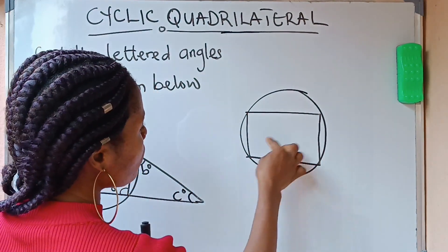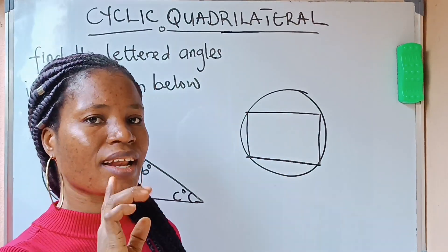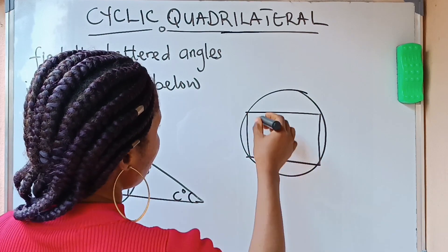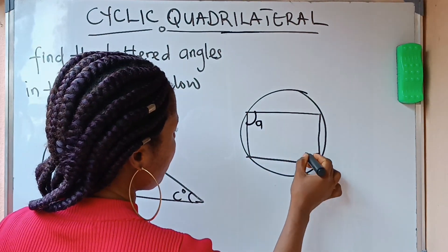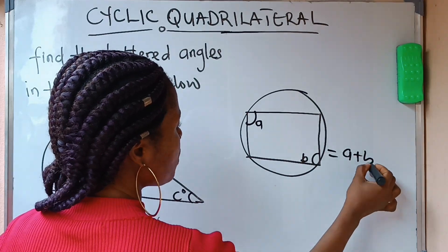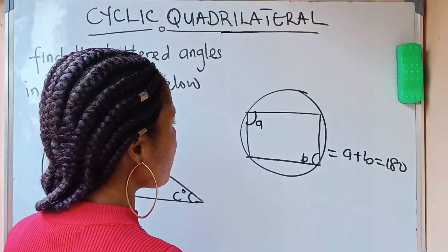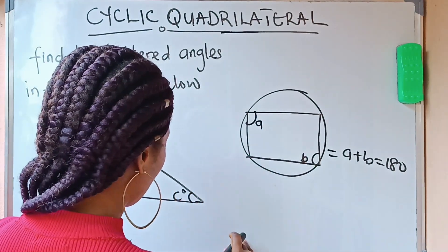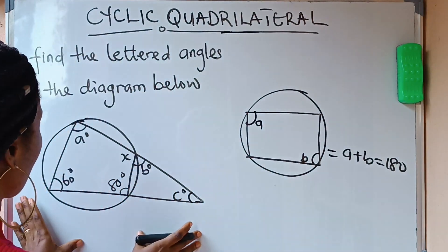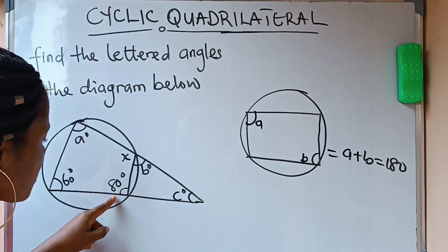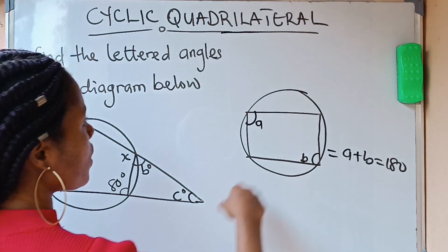One of them is that the sum of opposite angles of a cyclic quad is 180 degrees. What it means is that if you have A here and you have B here, it means that your A plus B is equal to 180 degrees. Now let's relate this to what we have here. When you look at what we have here now, you are going to notice that this A we are looking for is opposite this 80 degrees, right? So it means that...